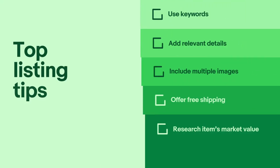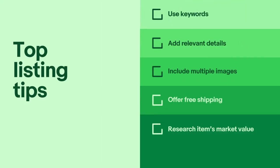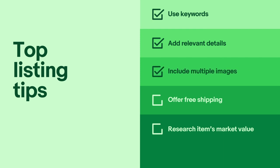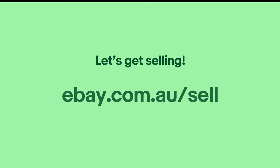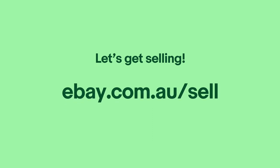And that's it. As you list, you'll be guided by eBay recommendations and tools along the way. Here's a recap of some top tips to keep in mind: use keywords in your title that customers will search for; add relevant details in your item specifics and description; include multiple good quality images; offer free shipping; research your item's market value; and factor shipping into the final price. You're ready to get started — head to ebay.com.au/sell and start listing today.